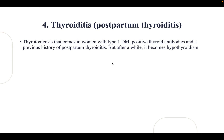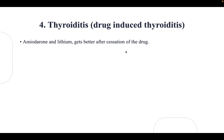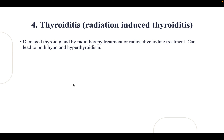Postpartum thyroiditis occurs in women with type 1 diabetes, positive thyroid antibodies, and a previous history of postpartum thyroiditis; it presents as hyperthyroidism then converts to hypothyroidism. Silent or painless thyroiditis is similar to postpartum but occurs in both men and women. Drug-induced thyroiditis is caused by amiodarone (for heart rhythm problems) or lithium (for bipolar disorder) and improves after cessation of the drug. Radiation-induced thyroiditis results from radiotherapy or radioactive iodine treatment and can lead to both hypo- and hyperthyroidism.